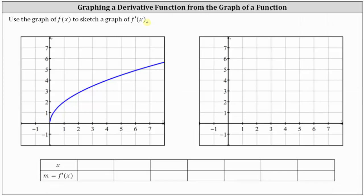We're asked to use the graph of f of x to sketch a graph of f prime of x. The derivative function values are equal to the slopes of the tangent lines to f of x at given values of x. Therefore, we will sketch several tangent lines to the graph of f of x and estimate the slopes to estimate the corresponding derivative function values. We will record the information in a table, where every x and corresponding derivative function value gives us one point on the graph of f prime of x.